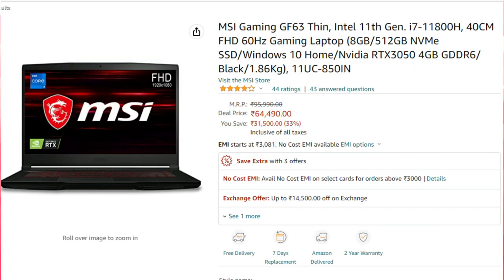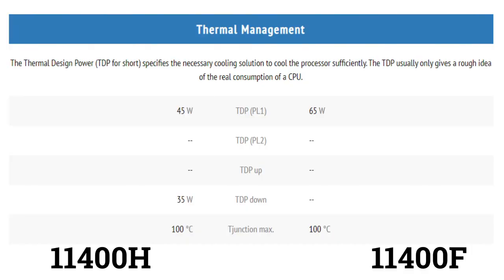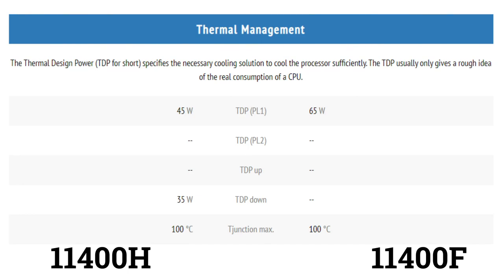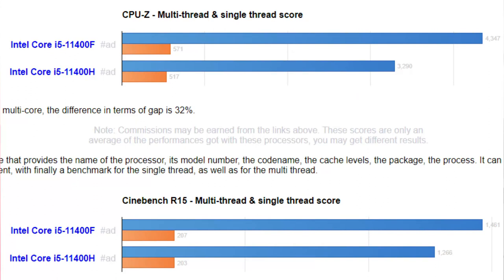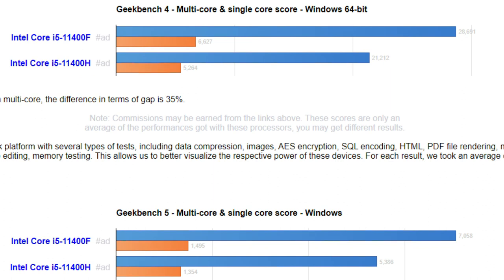If you compare the performance, the PC processor is the i5-11400F, which is a desktop processor. The desktop processor will outperform the laptop processor. However, in a laptop with TDP limitations, it will not be able to perform at the same level. The desktop can outperform the laptop by around 40-50%.